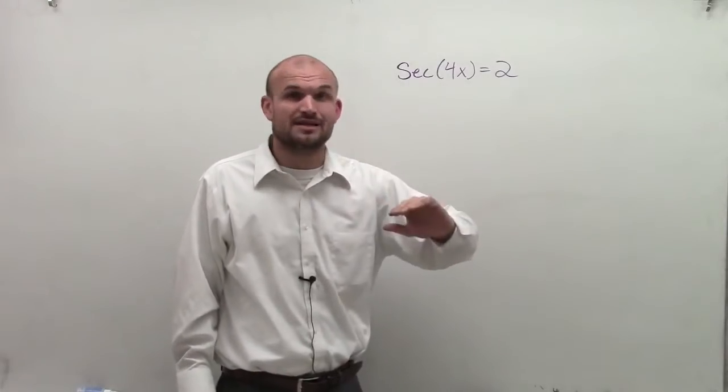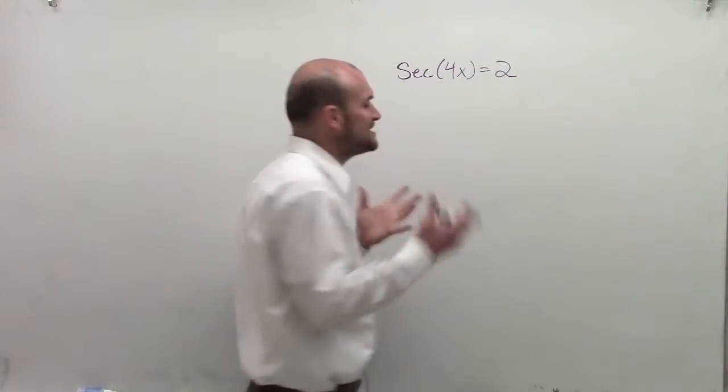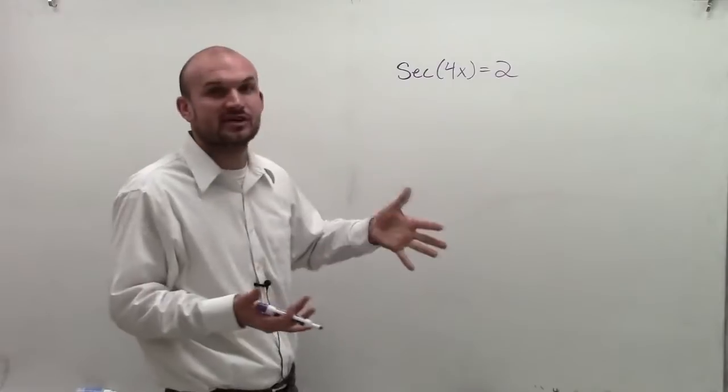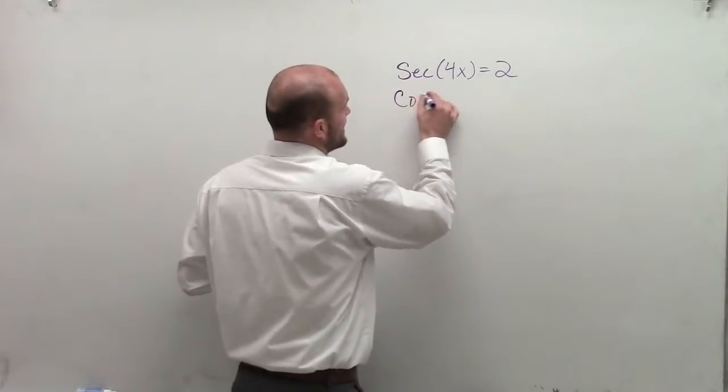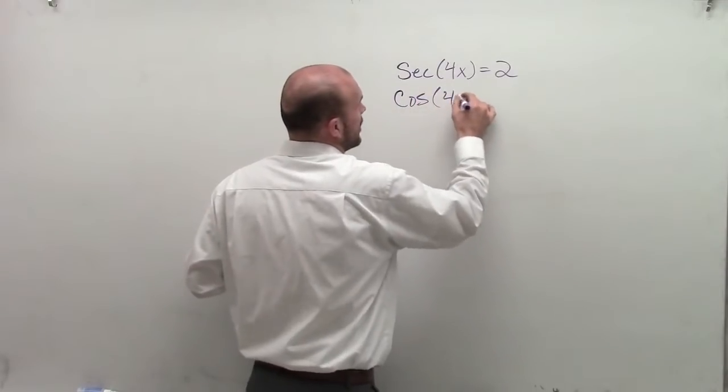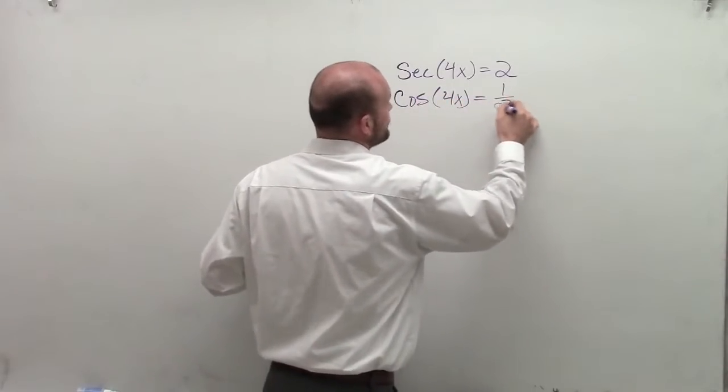Remember, secant is 1 over x when looking at the unit circle. But the best way that I like to look at this is just convert it to cosine. Remember, secant and cosine are reciprocals of each other. So therefore, I can say this is now cosine of 4x is now equal to 1 half.